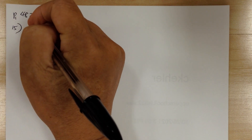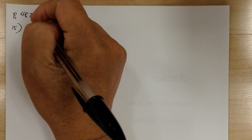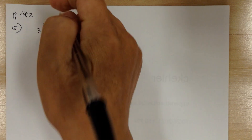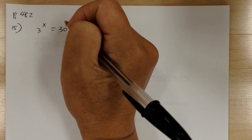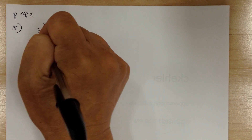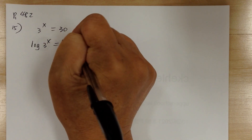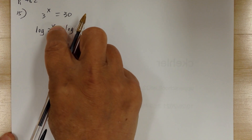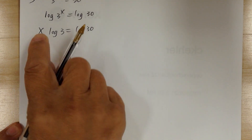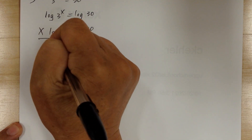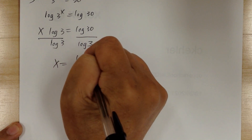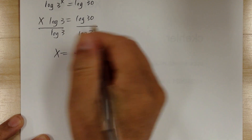Number 15 has two parts: get it into calculation-ready form, then calculate. For part A, what you want to do is take the log on both sides, so you get log of 3 to the x equal to log of 30. Now you can use the third log law to bring the x to the front, and you can get rid of the log 3 by dividing by log of 3. So you get x equal to log 30 over log 3. That's your answer for part A.